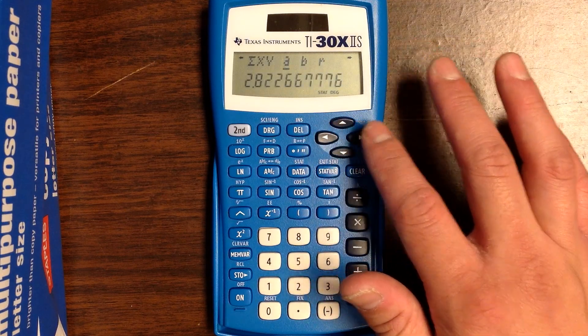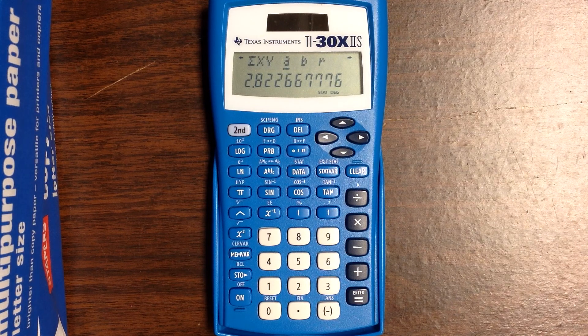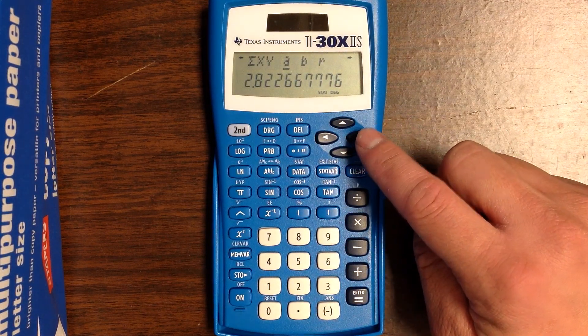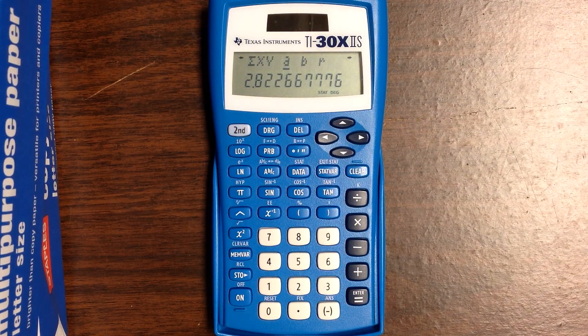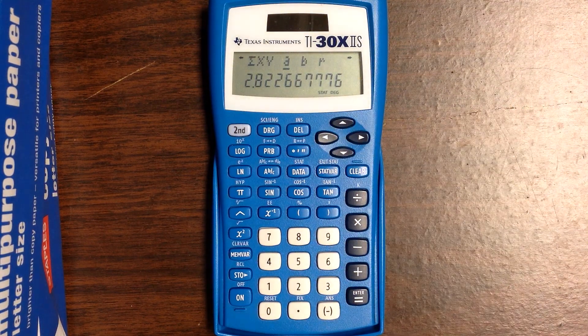The A and B refer to the equation of the best fit line. Calculators will alternate or disagree on what is considered slope and intercept. For the TI-30, A refers to the slope. The equation of your line is Y equals AX plus B, or Y hat equals AX plus B. The slope here is 2.823.